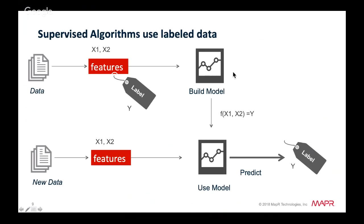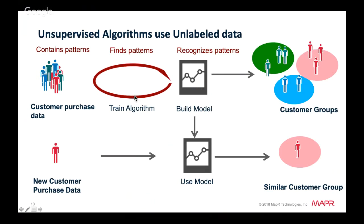Supervised algorithms use labeled data in which both the input and target outcome are provided to build a model, which you can then use to predict a label. Unsupervised algorithms find patterns in unlabeled data — for example, grouping similar customers based on purchase data, then using that model to find a similar customer group for new data.